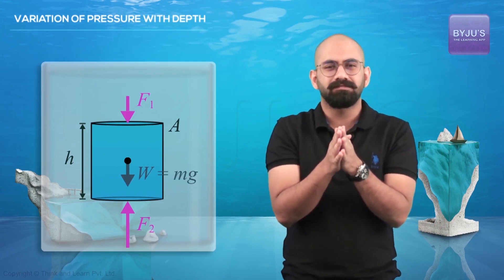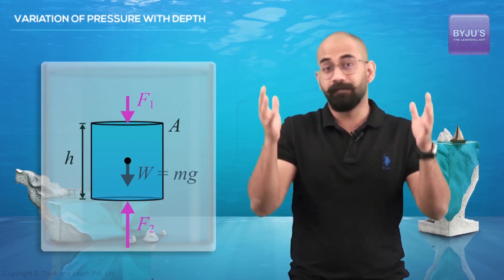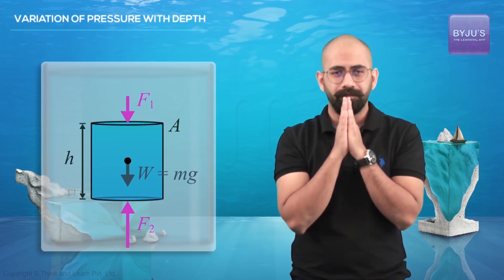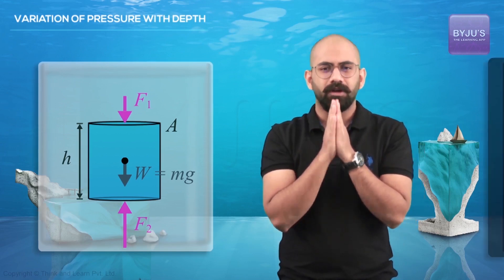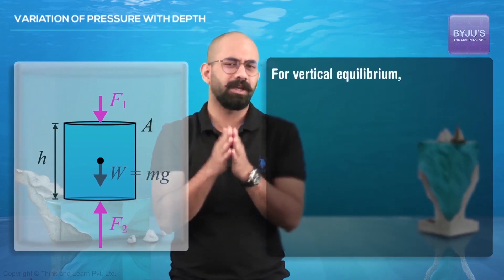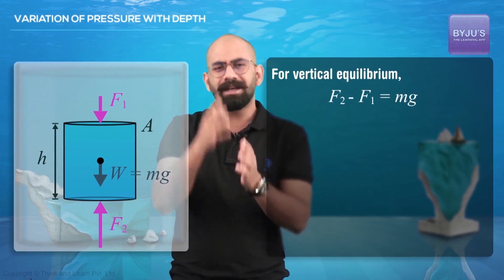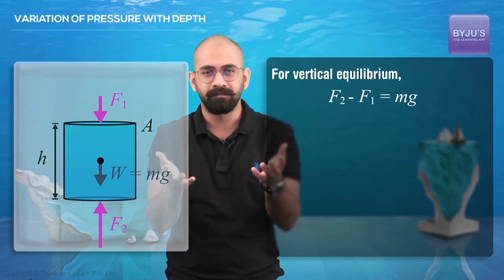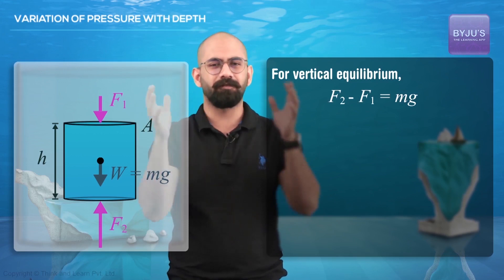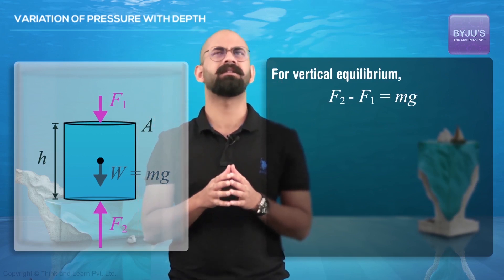So if we consider vertical equilibrium, we know that this cylinder is in equilibrium — it's not moving. So if we consider vertical equilibrium, the equation would be F2 minus F1 equals MG, where M is the mass of this cylindrical volume of water.